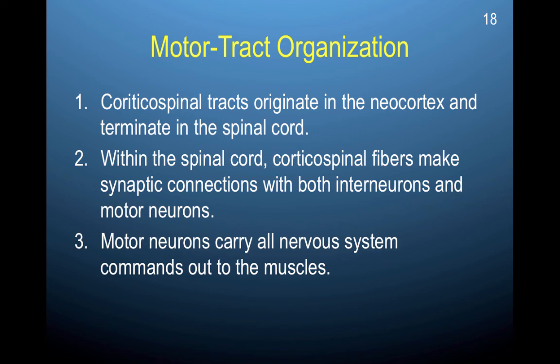Corticospinal tracts originate in the neocortex and terminate in the spinal cord. Within the spinal cord, the corticospinal fibers make synaptic connections with both interneurons and motor neurons. Motor neurons carry all nervous system commands out to the muscles. So neurons in the motor cortex send their axons all the way down into the spinal cord, where they connect with interneurons and motor neurons that pass this motor information on to the muscles — which is what we'll be learning about in the next video.